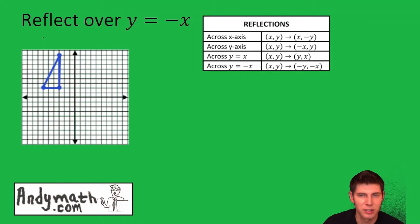Let's sketch y equals negative x. Y equals negative x is the 45 degree line going in the negative direction.